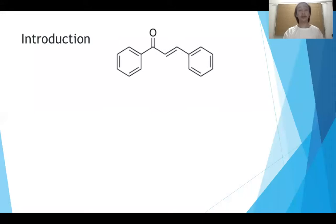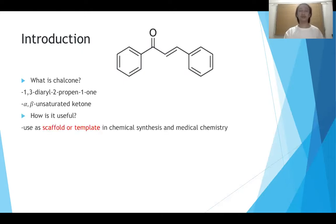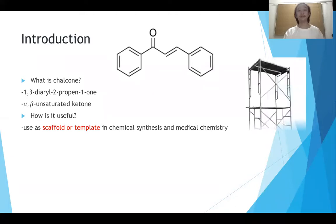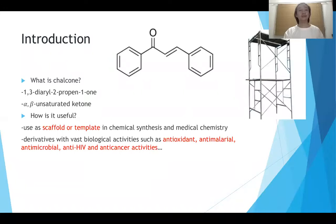What is chalcone? Chalcone, otherwise called 1,3-diaryl-2-propen-1-one, or an alpha-beta unsaturated ketone. It can be used as a scaffold in many chemical synthesis and medicinal chemistry. Derivatives of chalcone have many biological activities.